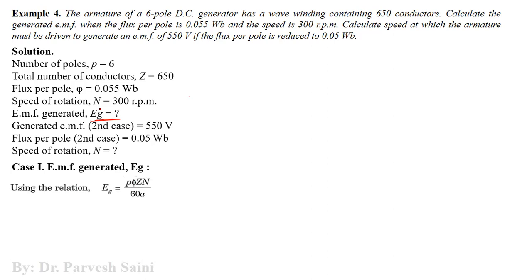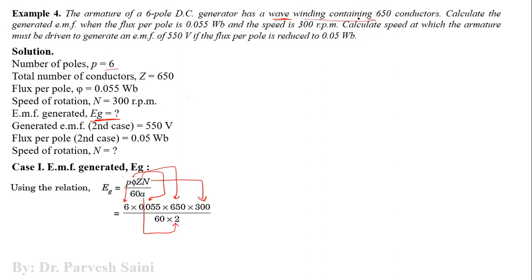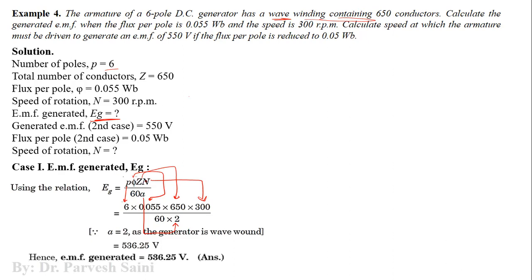For case one, using Eg = (P × phi × Z × N) / (60 × A): P = 6, phi = 0.055 weber, Z = 650, N = 300 rpm, A = 2. Solving this equation gives the generated EMF as 536.25 volts.